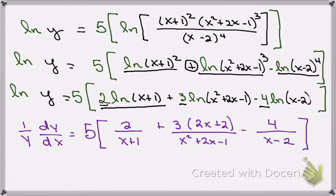For that last term, because the x-2, the derivative of that is just 1, then that's going to be the constant that's in front, minus 4 over (x-2).